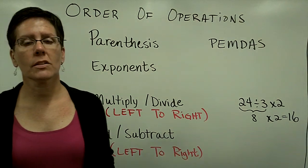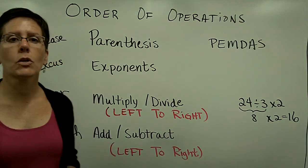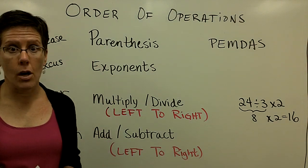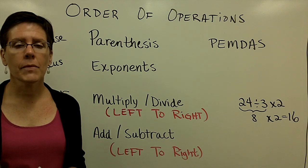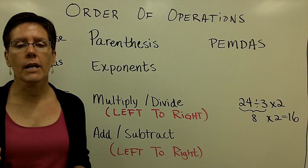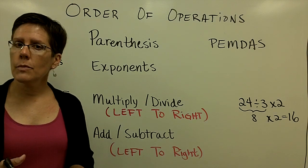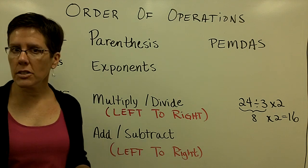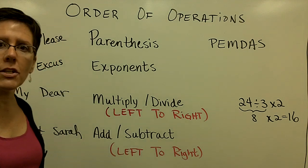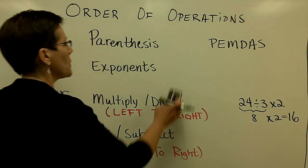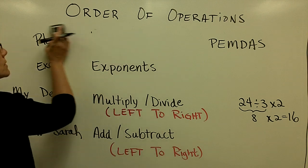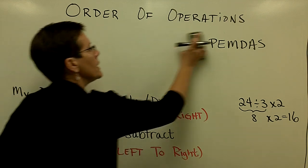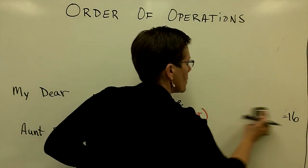The bottom line is: to be successful in an algebra course, you need to know the order of operations and you need to always follow it. I'm going to go ahead and do about 7 examples now, starting with some basic addition, subtraction, multiplication, and division, and then involving some exponents and parentheses. Please write those rules down and memorize them.